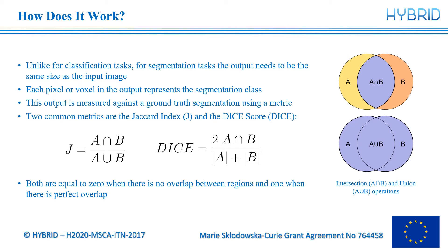This output segmentation is measured against a ground truth, often an expert delineation, using a metric. Two common metrics are the Jaccard index and the Dice score. Say we have our model-based segmentation A and our expert-based ground truth segmentation B. The Jaccard index is the ratio of the intersection of the two segmentations to the union of the two segmentations. The Dice score is two times the intersection divided by the sum of the sizes of the two segmented regions. Both these metrics are zero when there is no overlap between the predicted and ground truth regions, and one when there is perfect overlap.